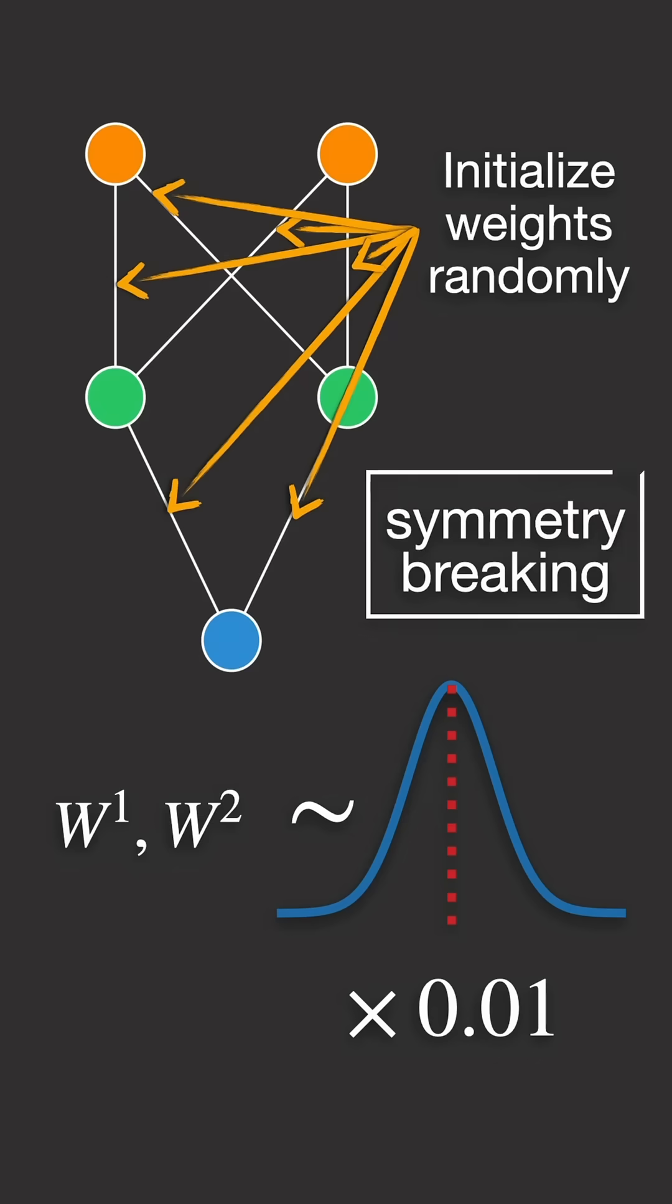This creates a symmetry breaking mechanism, ensuring different neurons learn different features.